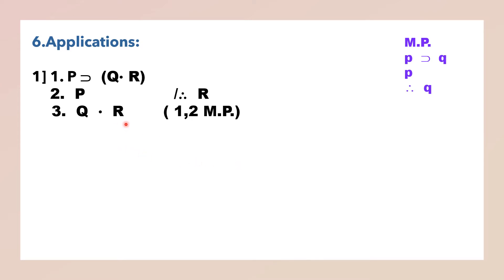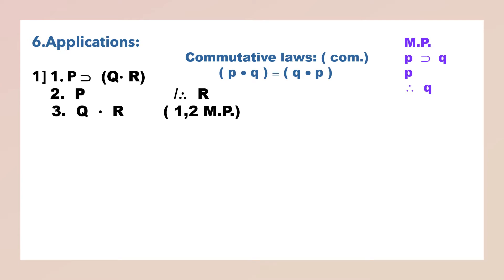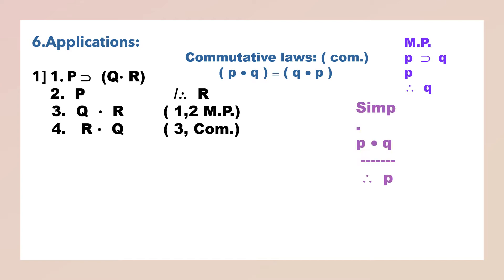According to the rule of simplification, we can infer the left conjunct. So there is a need to bring R on the left, and we can interchange the conjuncts only by commutative law. So we write R dot Q — third step, commutation. Now you can separate R by simplification: P dot Q, therefore P; R dot Q, therefore R. Thus we have arrived at the conclusion.